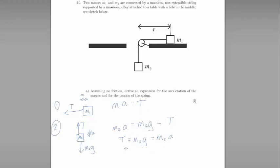Now we can equate equations 1 and 2 to get M1A equals M2G minus M2A. Now let's group the A's together on one side. So M1A plus M2A equals M2G.